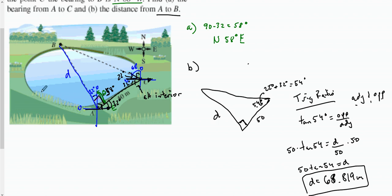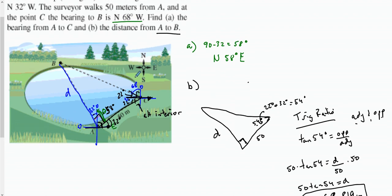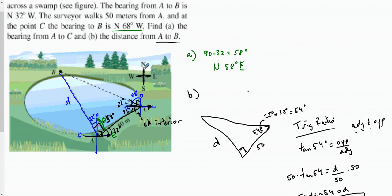It looks like a lot, but remember how we use our compass directions: when it goes North, you start at North — North 68 West or North 32 West — that helps you find your compass directions. Use the angles you're given to find other angles, since each bearing line is 90 degrees. Use alternate interior angles, corresponding angles, and so on from parallel lines to figure out the triangle's angles.